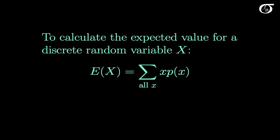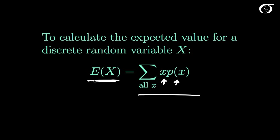To calculate the expected value for a discrete random variable X, we have this formula. Our expectation of X is equal to the sum of x times p(x) over all x. What we're doing is taking all the possible values of x, weighting them by their probabilities of occurring, and summing it up over all those x's. What we end up with is our overall expectation, or in other words, the mean of the random variable X.